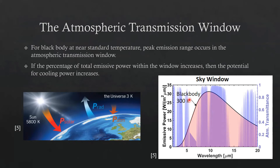This curve here is the emissive power of a black body at 300 Kelvin, or 80 degrees Fahrenheit. We see that a large area under this curve falls within this atmospheric transmission window, and this area here actually represents the potential cooling power. So if we can increase the amount of emissive power that falls within this 8 to 13 micron region, we can increase the potential for cooling power from a radiative device.